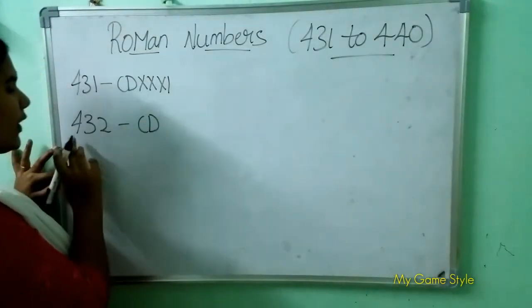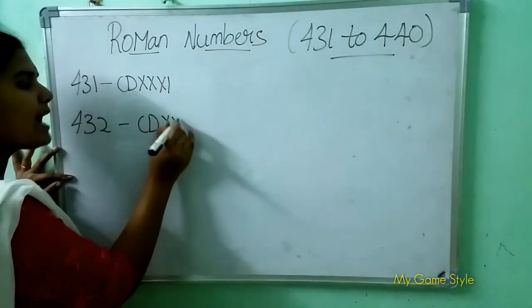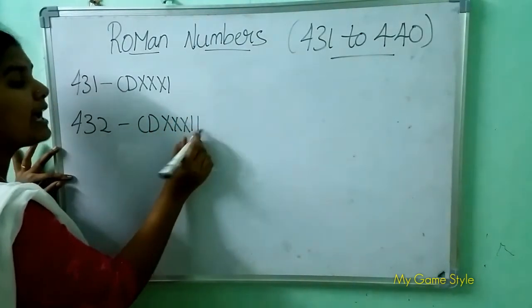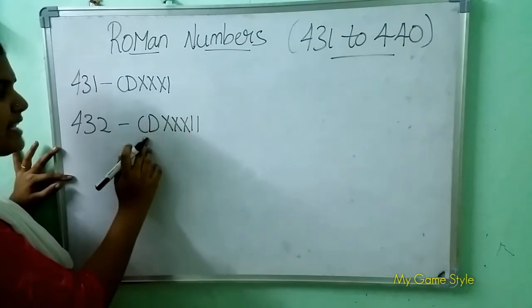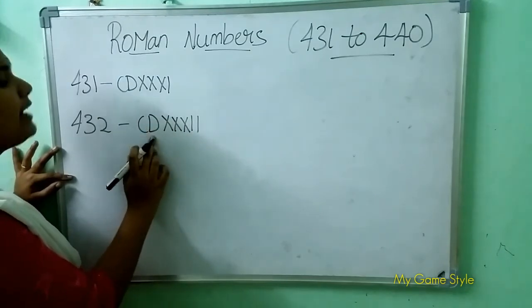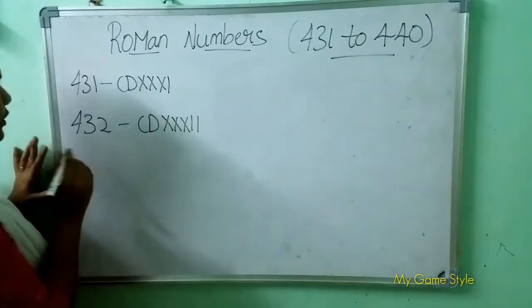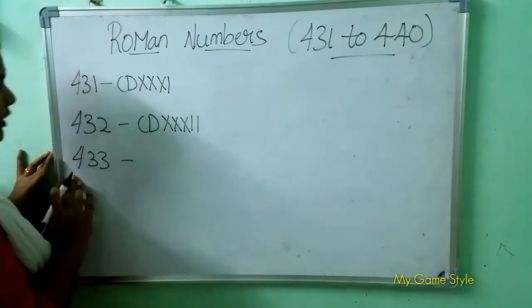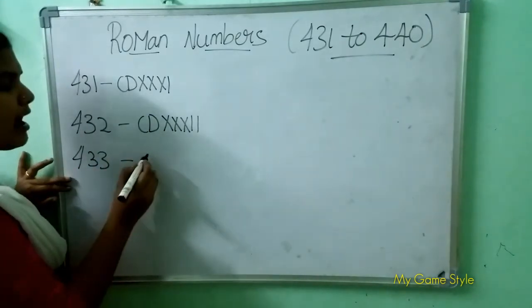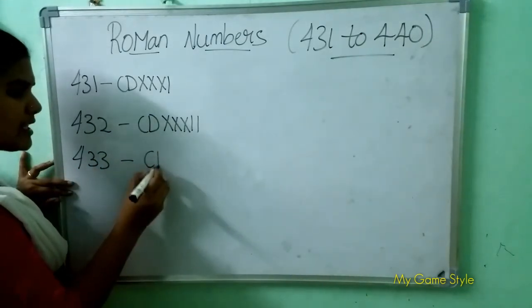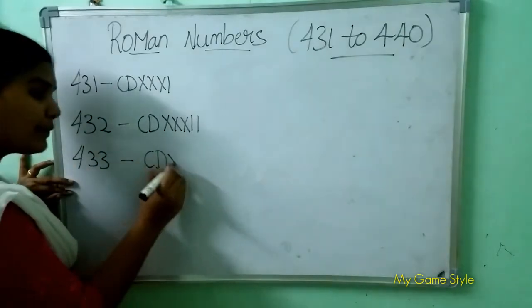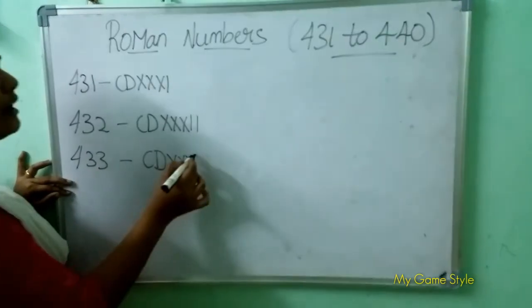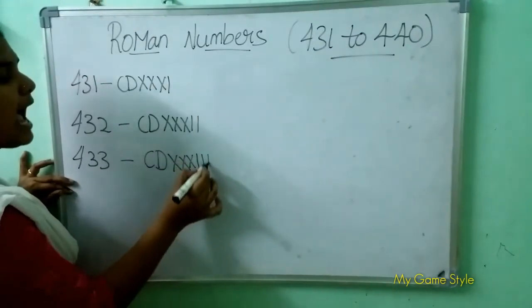CD is 400, triple X is 30, double I is 2. So this means 432. Next, 433 — how to write 433? CD is 400, triple X is 30.